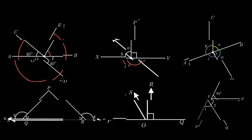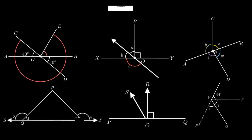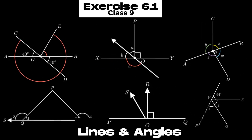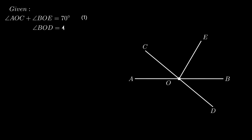In this video we are going to solve problems of chapter 6, that is Lines and Angles of class 9th. Let's continue with the first one: given AB and CD are two intersecting lines such that the sum of angle AOC and angle BOE equals 70 degrees. It is also given that angle BOD equals 40 degrees.